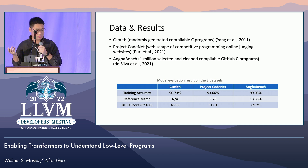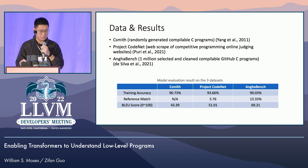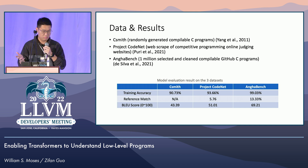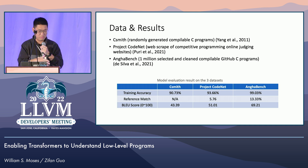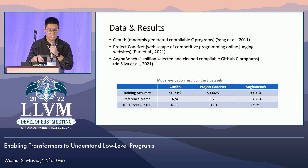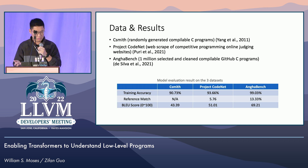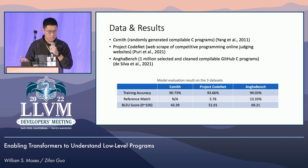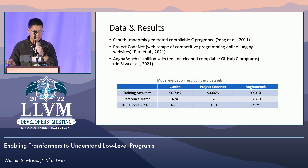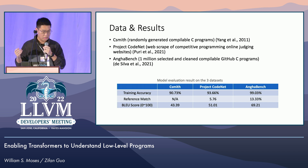We landed on AnghaBench, which is a million selected and cleaned compilable GitHub C programs. There are a lot of C programs out there, but a lot of them can't be compiled just from where they are, and there's no way for us to know which can be compiled and which can't. Fortunately, a group of researchers collected this benchmark specifically to facilitate machine learning on compiler languages, and this is a very handy dataset we used and eventually found a lot of success on.